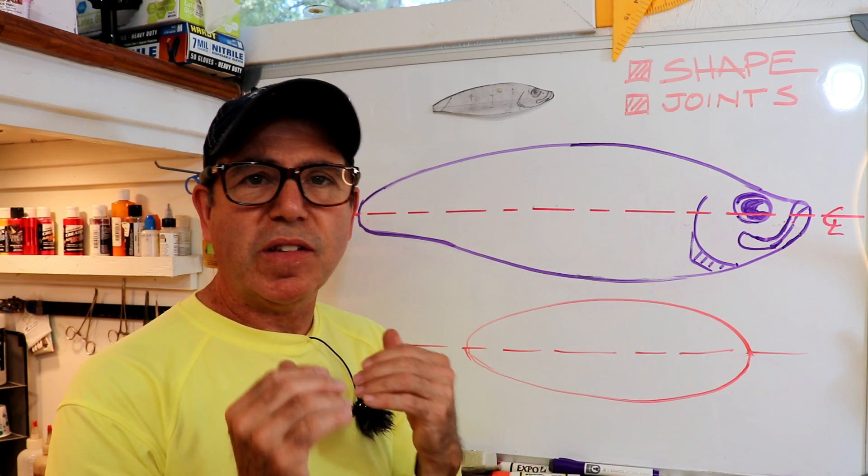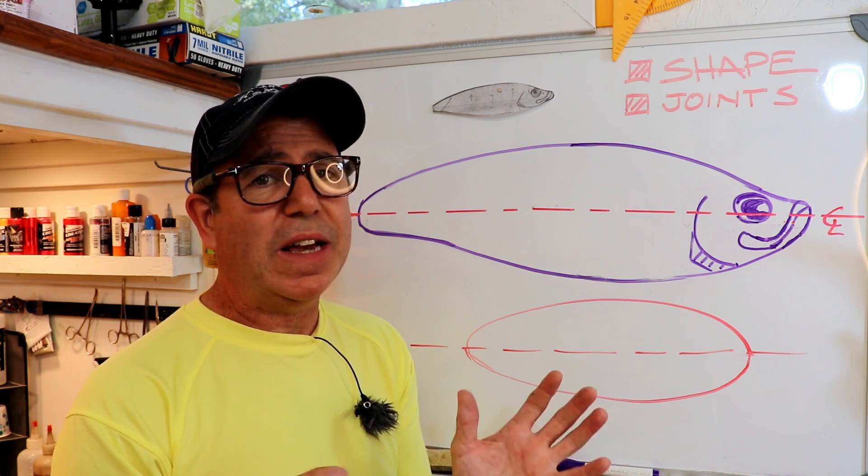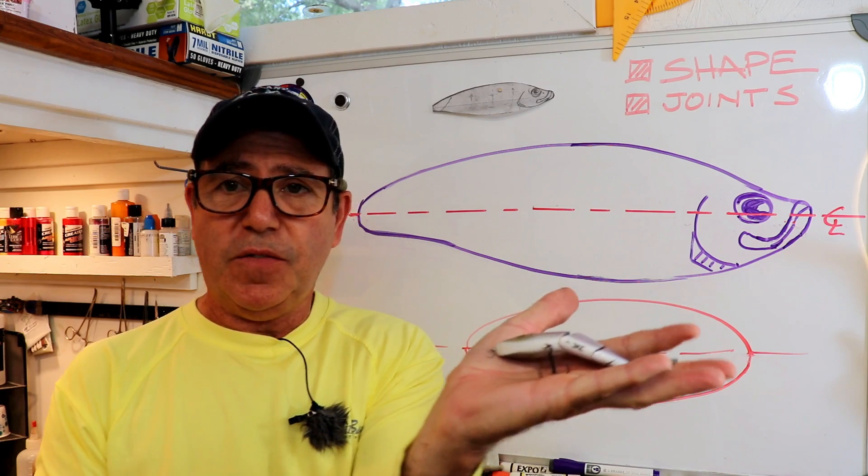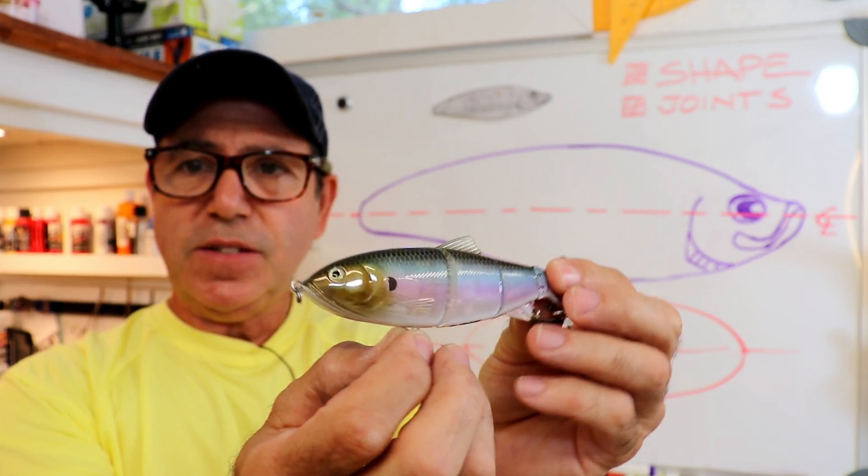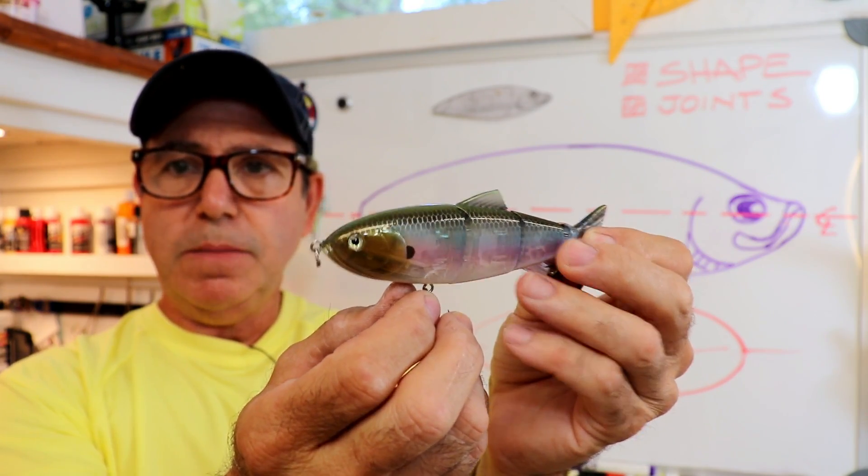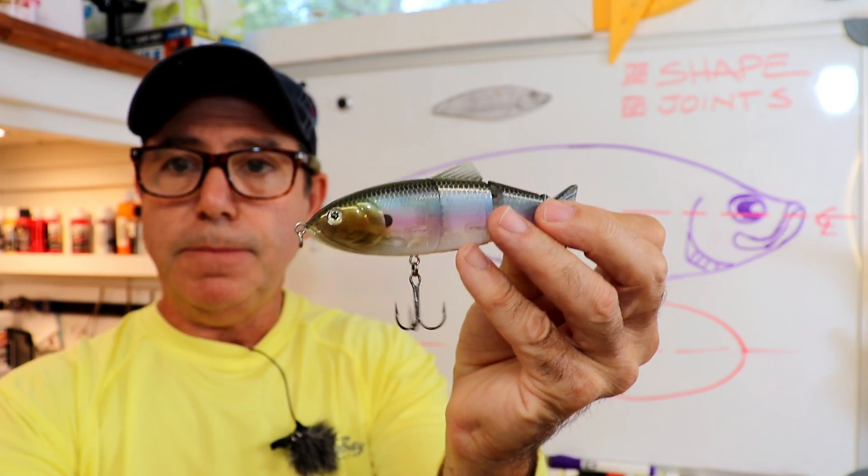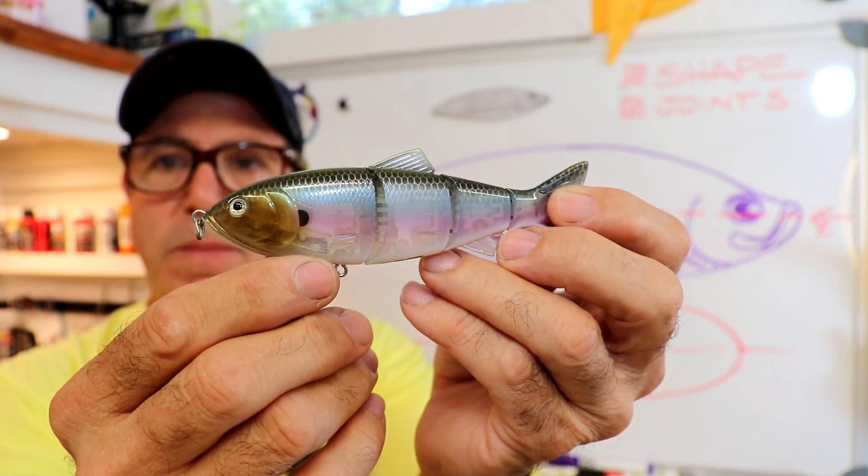If you look at this factory made lure, you'll see that it's really almost perfectly symmetric about the center line, and the reasons for that are what I'm explaining.